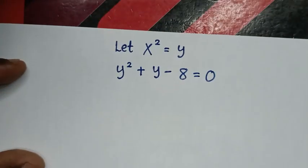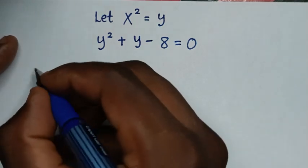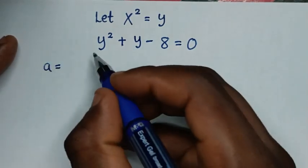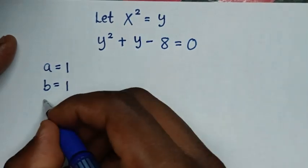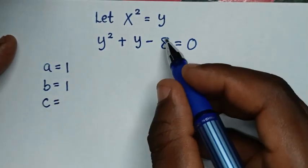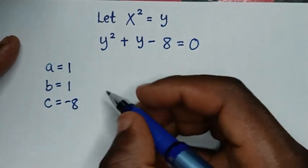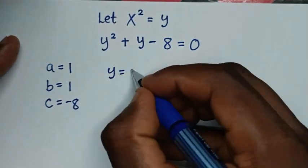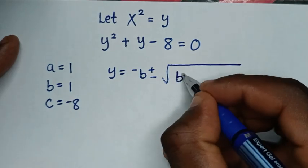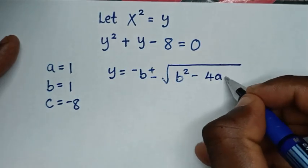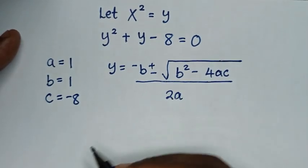Now, from this quadratic equation, we will solve by using the quadratic formula, whereas a is equal to the coefficient of y square — it is 1, and b is equal to the coefficient of y — it is 1, and c is equal to the constant — it is negative 8. So, from the quadratic formula, which is y is equal to negative b plus or minus square root of b square minus 4ac over 2a.